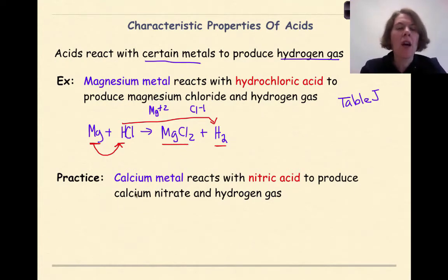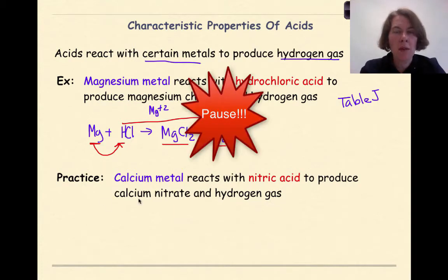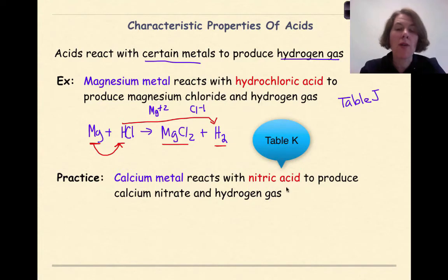Now let's do some practice. Calcium metal reacts with nitric acid to produce calcium nitrate and hydrogen gas. See if you can write out this reaction and then check your work with me. And remember, if you need the formula for nitric acid, it's in your reference tables.